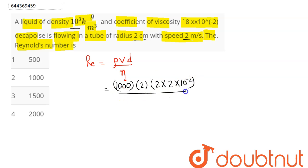Next, in the denominator it says decapoise, that is its SI unit, so this is 8 into 10 power minus 2. This comes as a thousand. Hence the Reynolds number value is equal to a thousand, which is option number 2. Hence 2 is the correct answer.